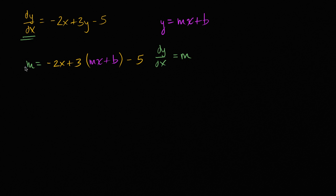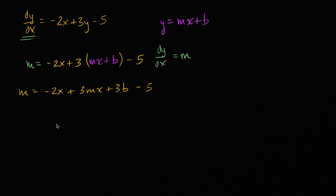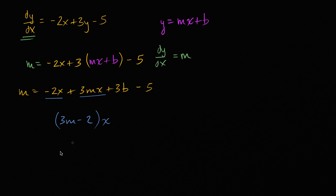Let's keep algebraically manipulating this. We have m is equal to negative 2x plus, distributing the 3, we get 3mx plus 3b, and then minus 5. Now we can group the x terms. Taking the x terms together gives us negative 2 plus 3m times x, or we can write this as 3m minus 2 times x. Then the constant terms give us plus 3b minus 5, and that's all equal to m.